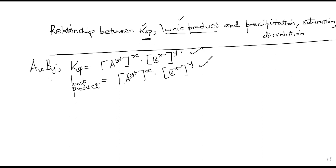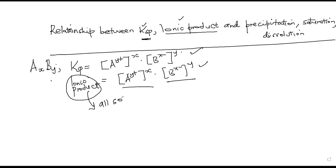You realize that the expression for Ksp and the expression for the ionic product are the same. The difference is that the ionic product is applicable to all types of solutions, and the ionic product will always increase when the concentration of the ions increases.